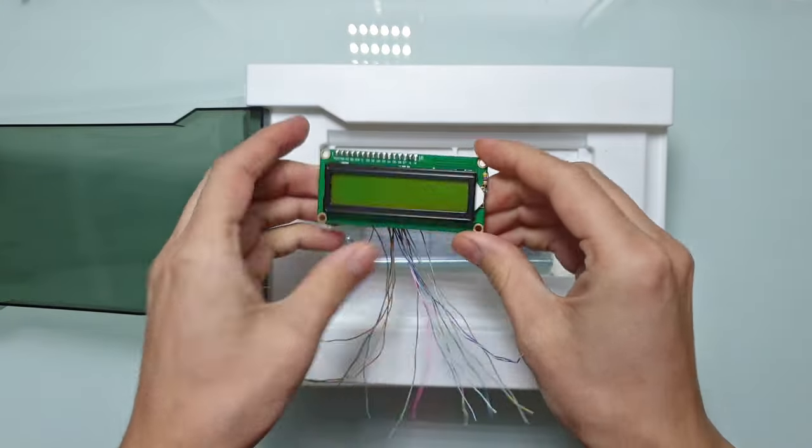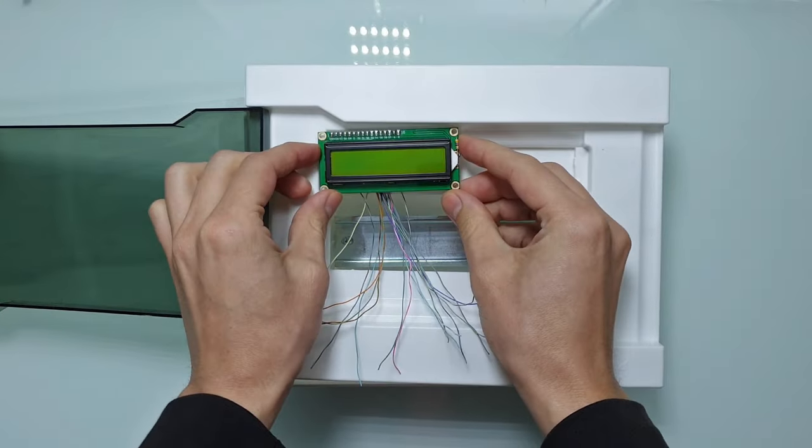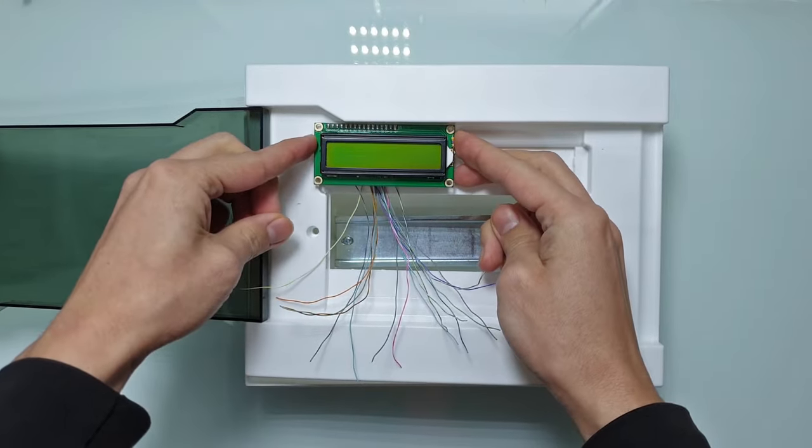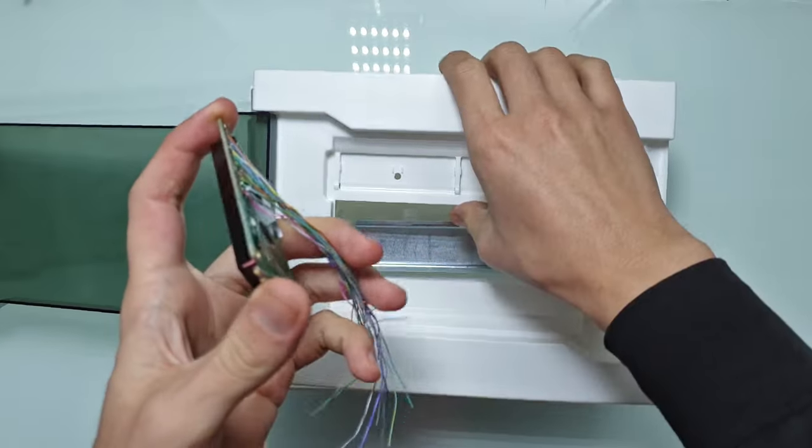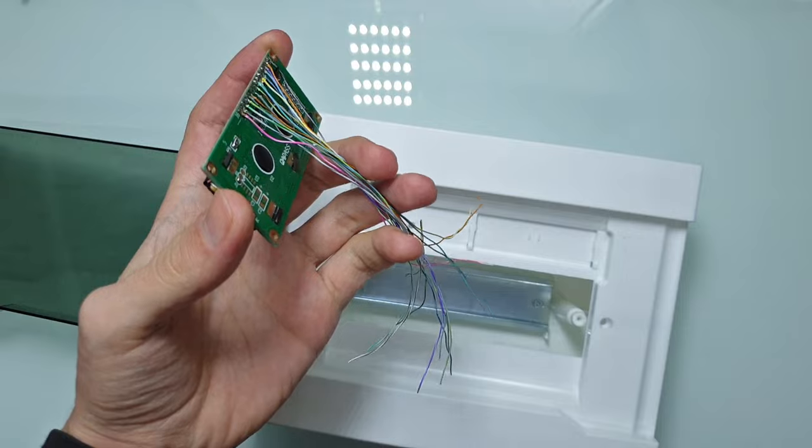Today we're gonna fix this by building a distribution board that has a display, Wi-Fi, can measure power and a lot of other stuff, and sends data to the internet. So get some coffee and let's get started.